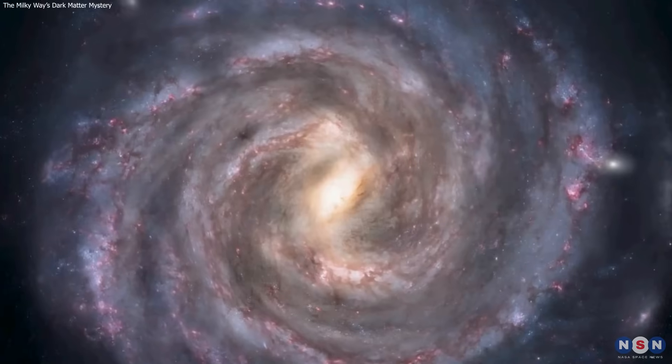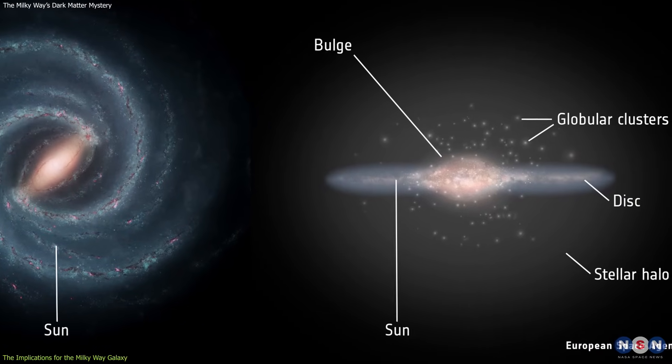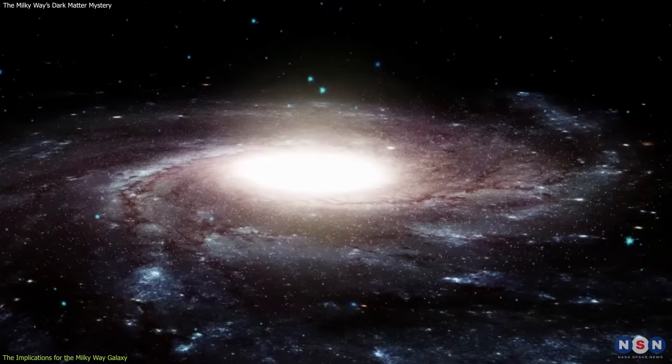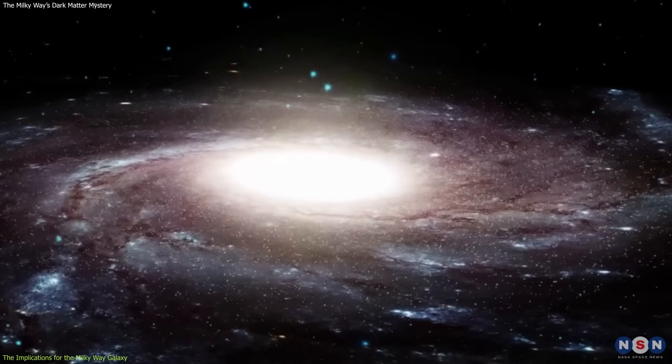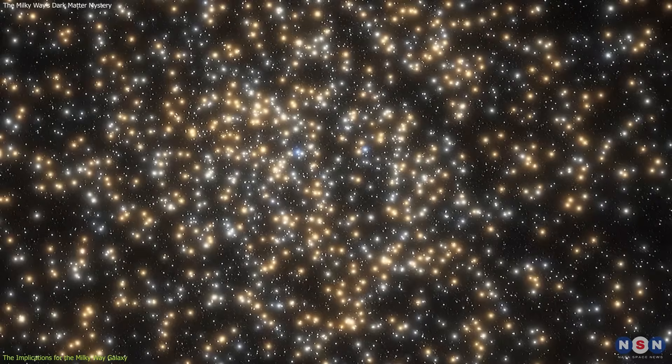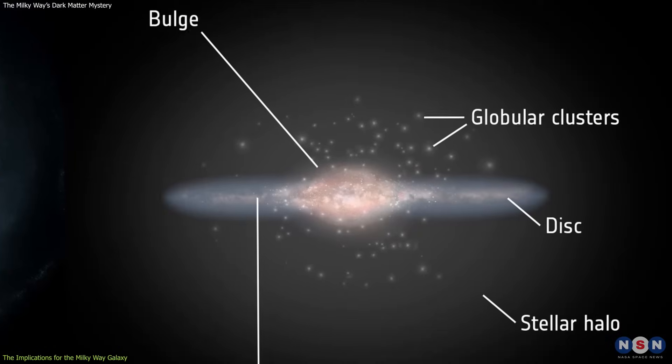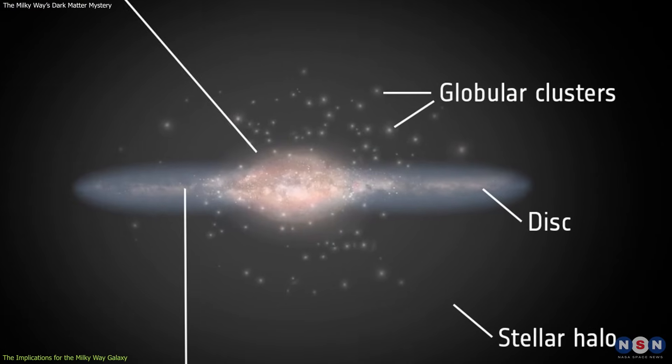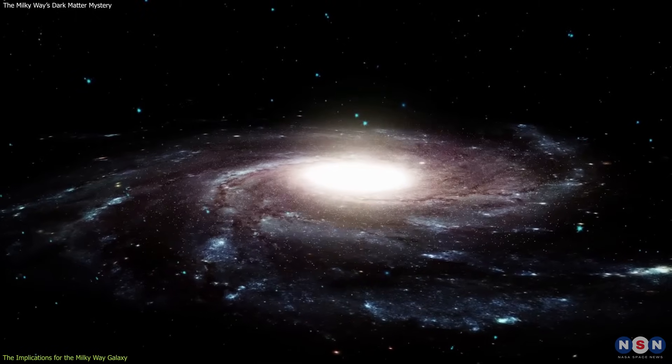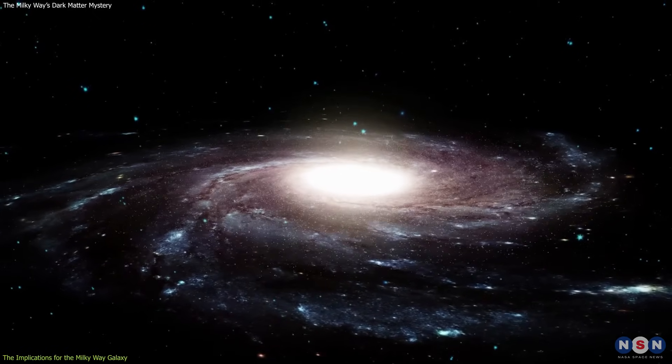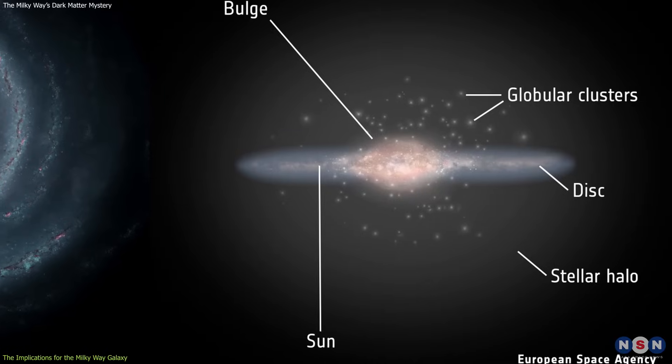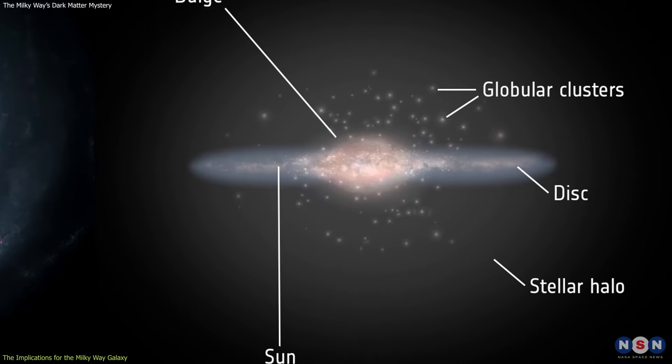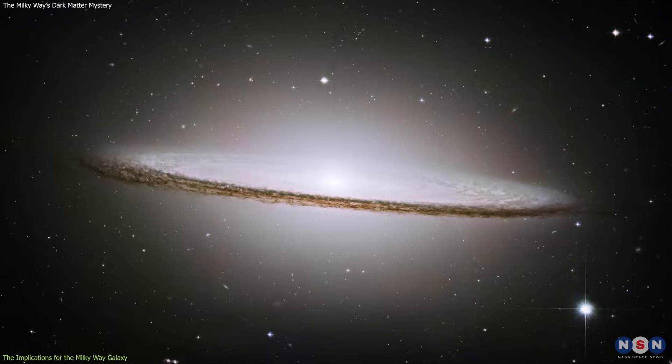The Milky Way galaxy is a spiral galaxy, which means that it has a central bulge, a flat disk, and a halo. The bulge is the densest and oldest part of the galaxy, where most of the stars are red giants. The disk is the thinnest and youngest part of the galaxy, where most of the stars are blue and white, and where the spiral arms are located. The halo is the faintest and most diffuse part of the galaxy, where most of the stars are old and dim, and where the globular clusters are found.